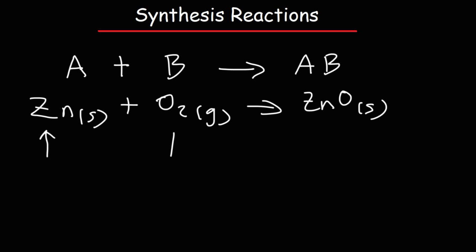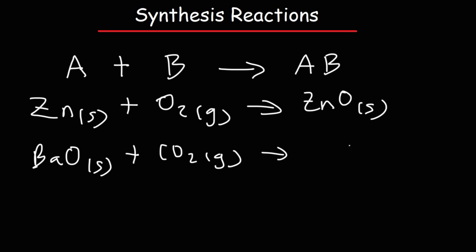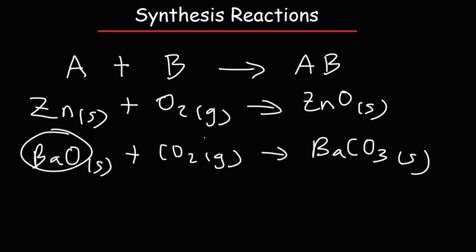Zinc and oxygen are pure elements. Zinc oxide is a compound — it's made up of two different elements. Here's another example: if we take barium oxide, which is a compound, and react it with carbon dioxide, which is another compound, this will give us a single product at low temperatures known as barium carbonate. This is also a synthesis or combination reaction because we're taking two smaller components and combining them into a single product.